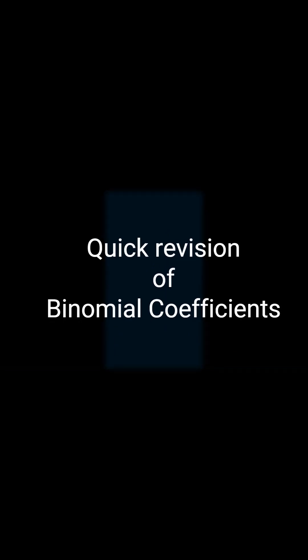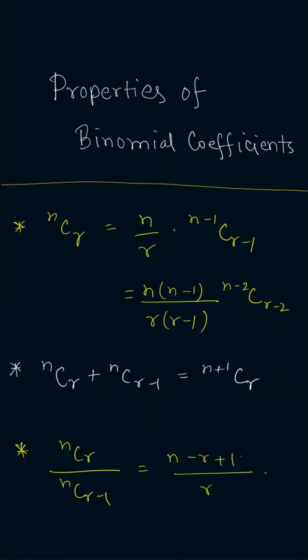Here is a quick revision of properties of binomial coefficients and binomial series for JEE Main 2025. The binomial coefficient NCR can be written as n by r times n minus 1 CR minus 1, and can also be further written as n into n minus 1 divided by r into r minus 1 into n minus 2 CR minus 2, and so on.